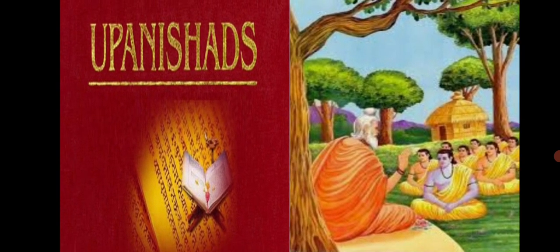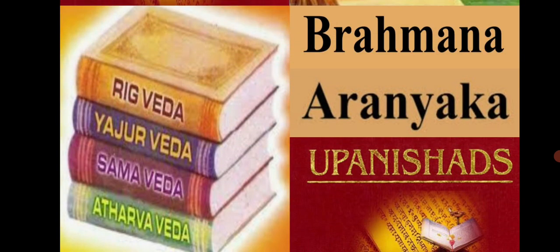The term Upanishads indicates knowledge acquired by sitting at the feet of the teacher. Human beings have always wondered about events like life and death, and the Upanishads discuss such serious and profound issues. The four Vedas, Brahmanas, Aranyakas, and Upanishads were composed over a period of 1,500 years. During this long period, the Vedic civilization underwent many changes, and the Vedic literature is an important source for the study of those changes and of day-to-day life in the Vedic period.